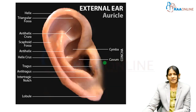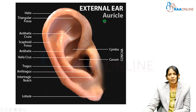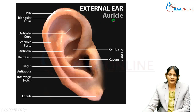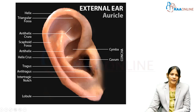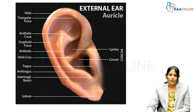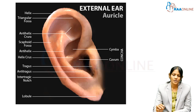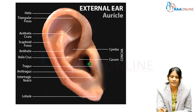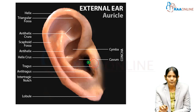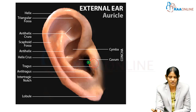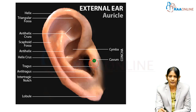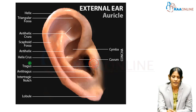Everybody is familiar with this picture because we see it in our mirror daily. The external ear is called the auricle in medical terminology. There are numerous parts, which are enlisted here. The important landmark to remember is the tragus, which serves as a landmark for adjacent structures such as the temporomandibular joint and the parotid gland. This is the region of the tragus on the auricle.